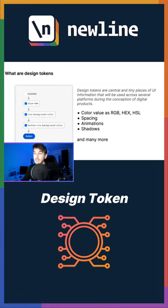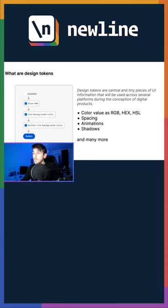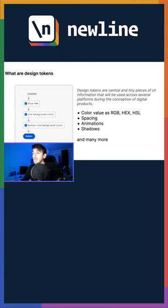A design token basically is a tiny piece of information, a raw value, that will be used across several of our digital products. A design token can be a color value as a hex string or an RGB or an HSL value, a spacing value in pixels, an animation or a shadow, and many more values that can be represented by a single value.